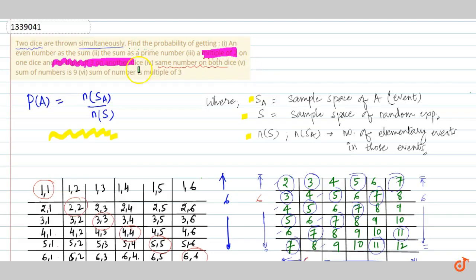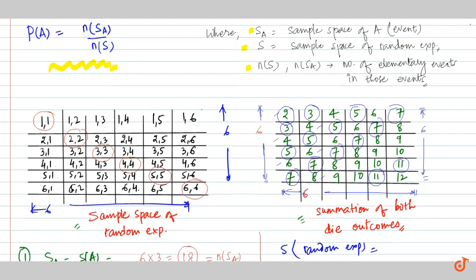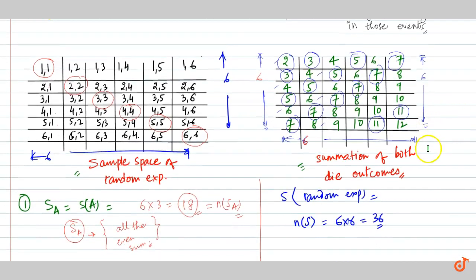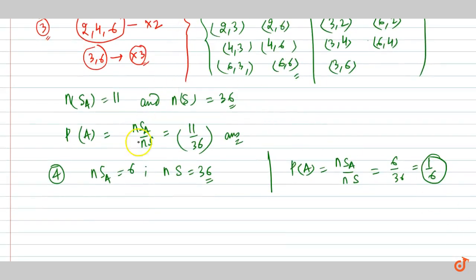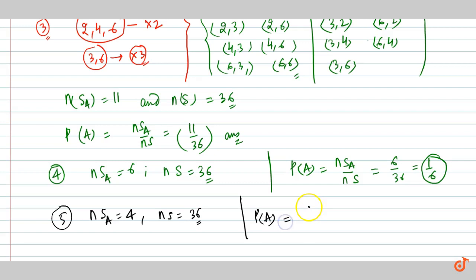The next part says that the sum of numbers should be 9. We can clearly check the number of outcomes which give us the summation to be 9. There are 4 such outcomes, and clearly we can see that there are no other summations of 9. So n(SA) equals 4, n(S) is 36, and our probability is 4 upon 36, which is 1 by 9.